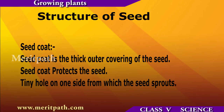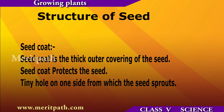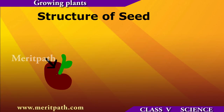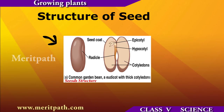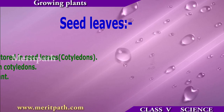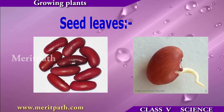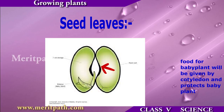A seed is a small plant enclosed in a covering called the seed coat. The seed coat is the thick outer covering of the seed which protects it. Seed leaves, also known as cotyledons, provide food to the baby plant which lives in them, and also protect the baby plant.